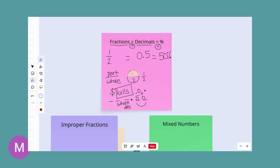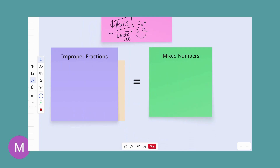Now that we remember what fractions, decimals, and percentages are like, there are two different types of fractions specifically that we are going to work with. We talked earlier about a proper fraction — it's proper because it's in the form we're used to: small number over larger number, the part over the total whole. But we will begin to see improper fractions and mixed numbers, and these two things are equal and have the same value, just look different.